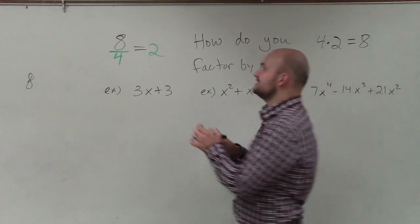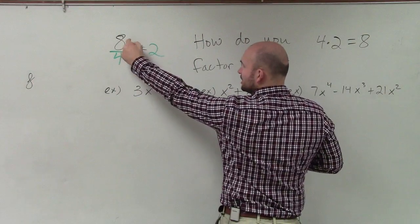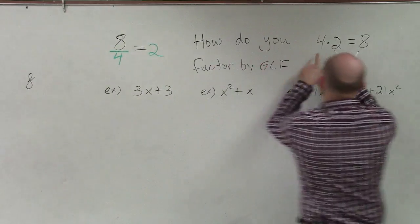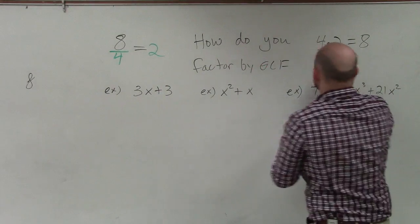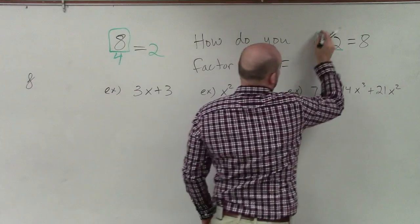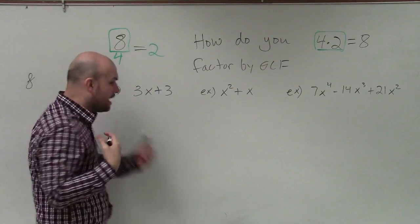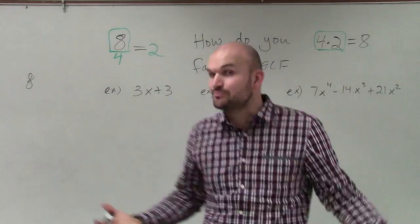So basically what I did is I took a factor, which was 4, and I multiplied it by the quotient of 8 divided by 4, which was 2. And that gave me an expression that was the same as my number 8. So I rewrote the number 8 as a product. So we're going to do the same thing here. But now we're not dealing with numbers. We're dealing with expressions.